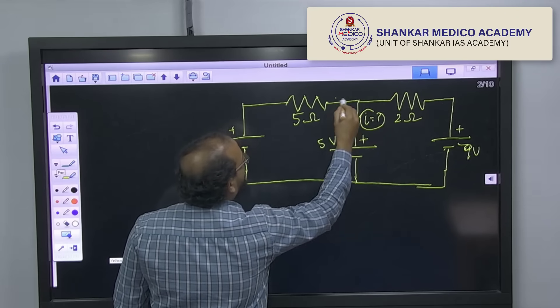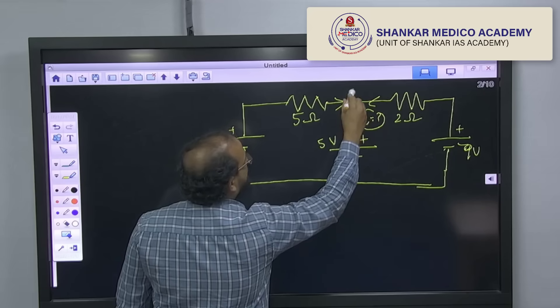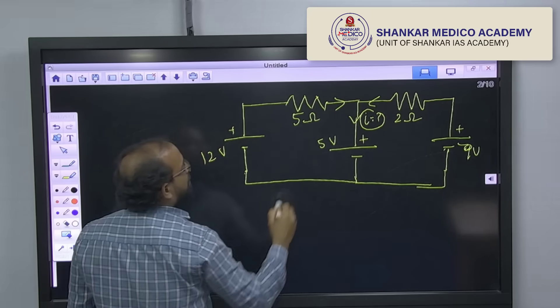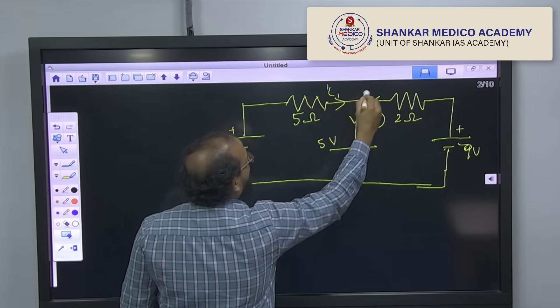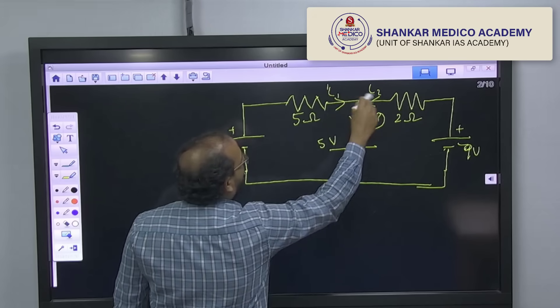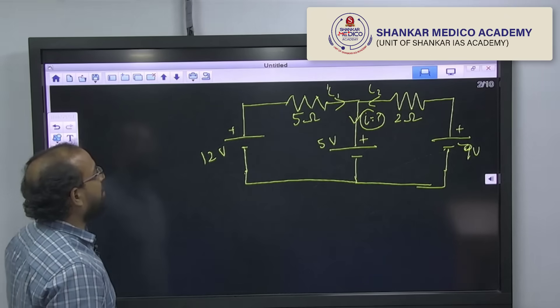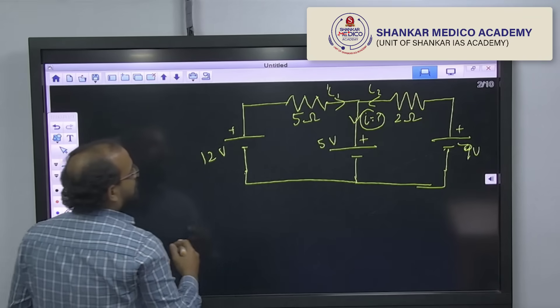This I is nothing but the current flowing in the junction, according to Kirchhoff's current law. So, if I know the current I1, I will take I2 and add those things, you will get the answer. How I can get that? Very simple.